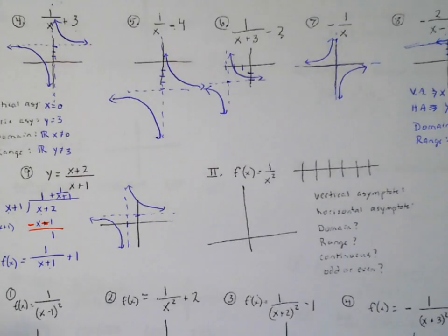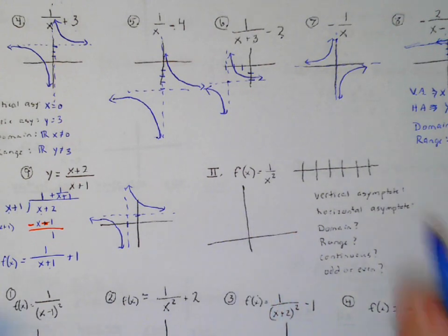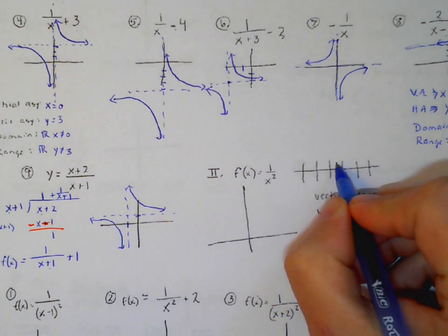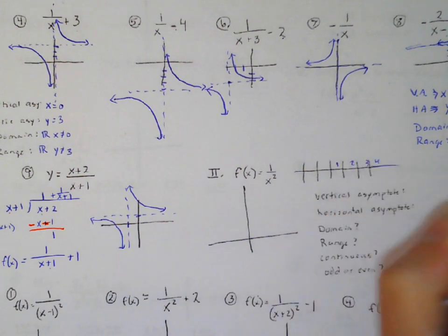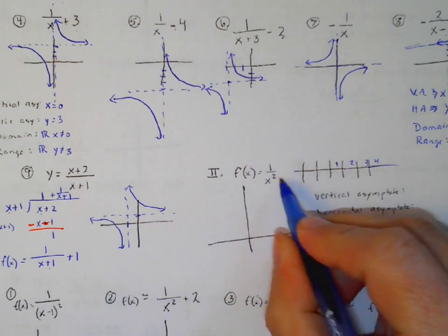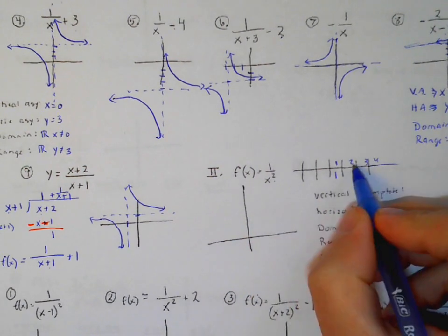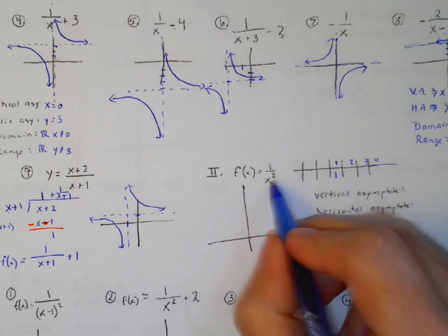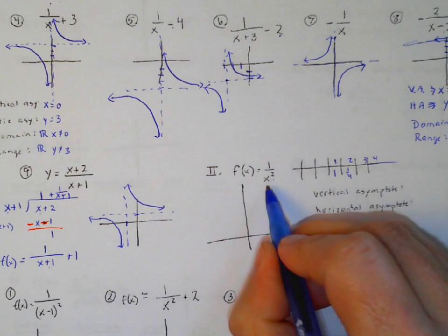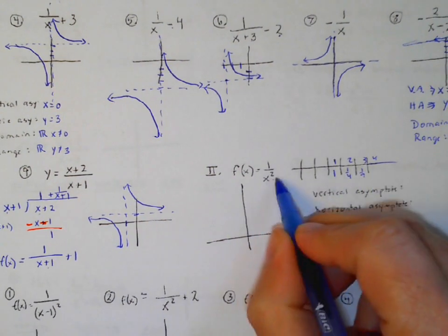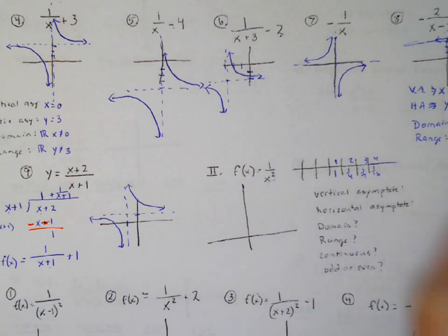The other function we're going to look at today is 1 over x squared. Let's think about some numbers: at x=1, 1 squared is 1, so 1 over 1 is 1. At x=2, 2 squared is 4, so it's 1/4. At x=3, 3 squared is 9, so 1/9. At x=4, 4 squared is 16, so 1/16.